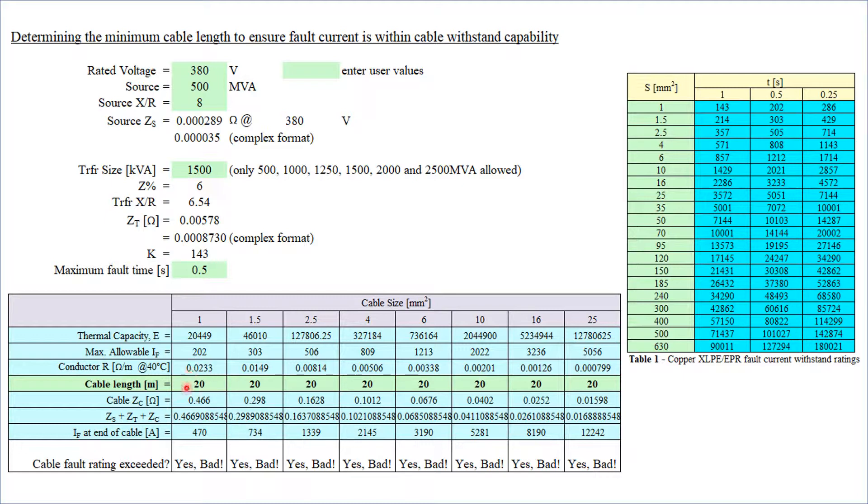Now let's suppose my cable length is only 20 meters, so I have a pretty short run of cable. My cable impedance is 0.466, and I can then calculate the total impedance from the source to the fault point, which is given by this value. So the fault current is 470 amps—that's the through-fault current for fault at the end of my cable. We can see 470 exceeds 202, so cable fault rating exceeded. Not good.